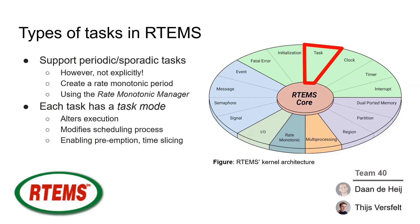There are various types of tasks in RTEMS. It supports both periodic and sporadic tasks, but periodic tasks are not defined explicitly — you have to create a rate monotonic period using the rate monotonic manager. Additionally, a task has a task mode, which is used to alter the execution of the tasks and to modify the scheduling process. For example, preemption and time slicing can be enabled or disabled, and an interrupt level can be set.